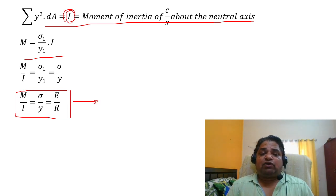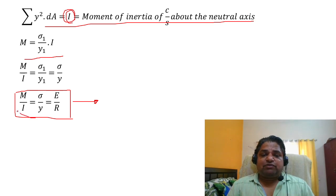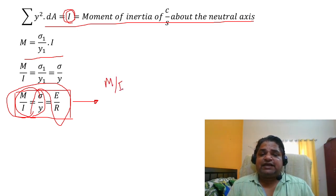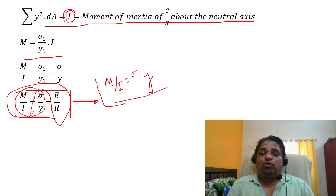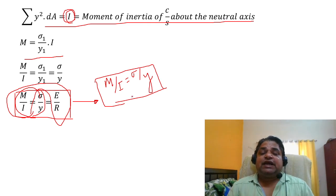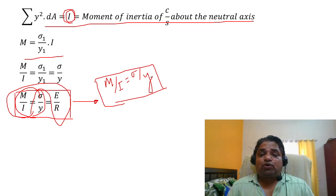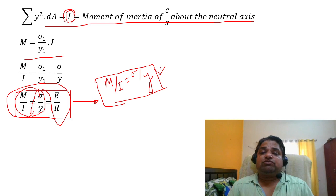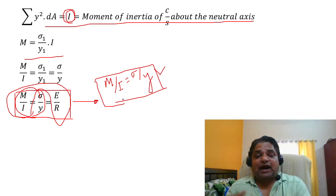This means we do not need the same cross section throughout the entire length of the beam. We can taper it — maximum cross-sectional area at the fixed end and minimum at the free end — and this will not compromise structural integrity under a simple loading condition. The section modulus and the flexural formula guide such design decisions.